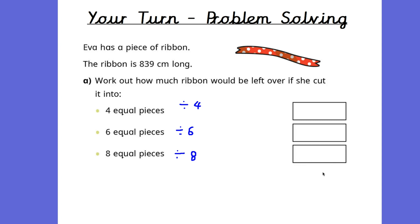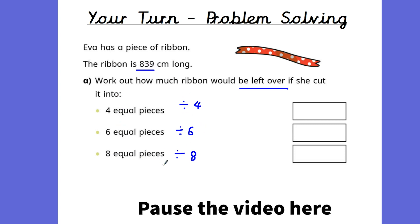Just a quick problem for you to have a think about. When the children can successfully do the method, they might be given a problem to deepen their understanding. Eva has a piece of ribbon — the ribbon is 839 centimetres long. Work out how much ribbon will be left over if she cuts it into 4 equal pieces, meaning we're dividing 839 by 4; 6 equal pieces would be 839 divided by 6; and 8 equal pieces would be 839 divided by 8. Pause the video here and have a go — but there will be remainders for each of those questions.